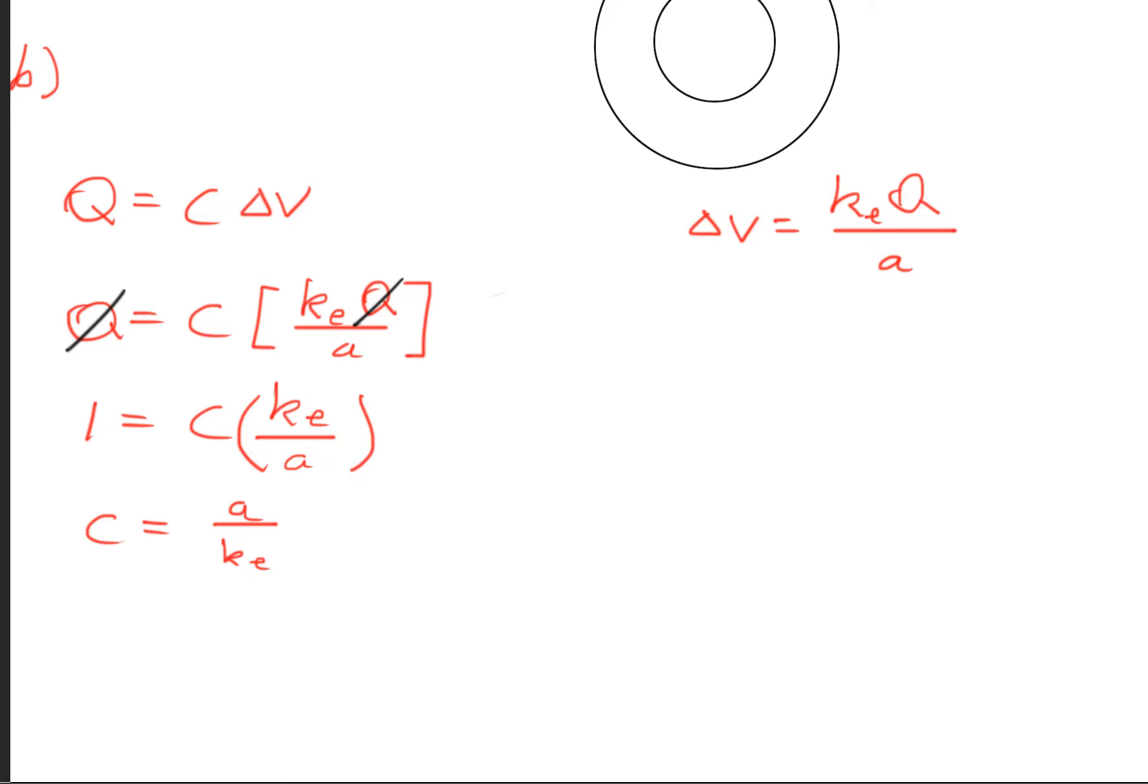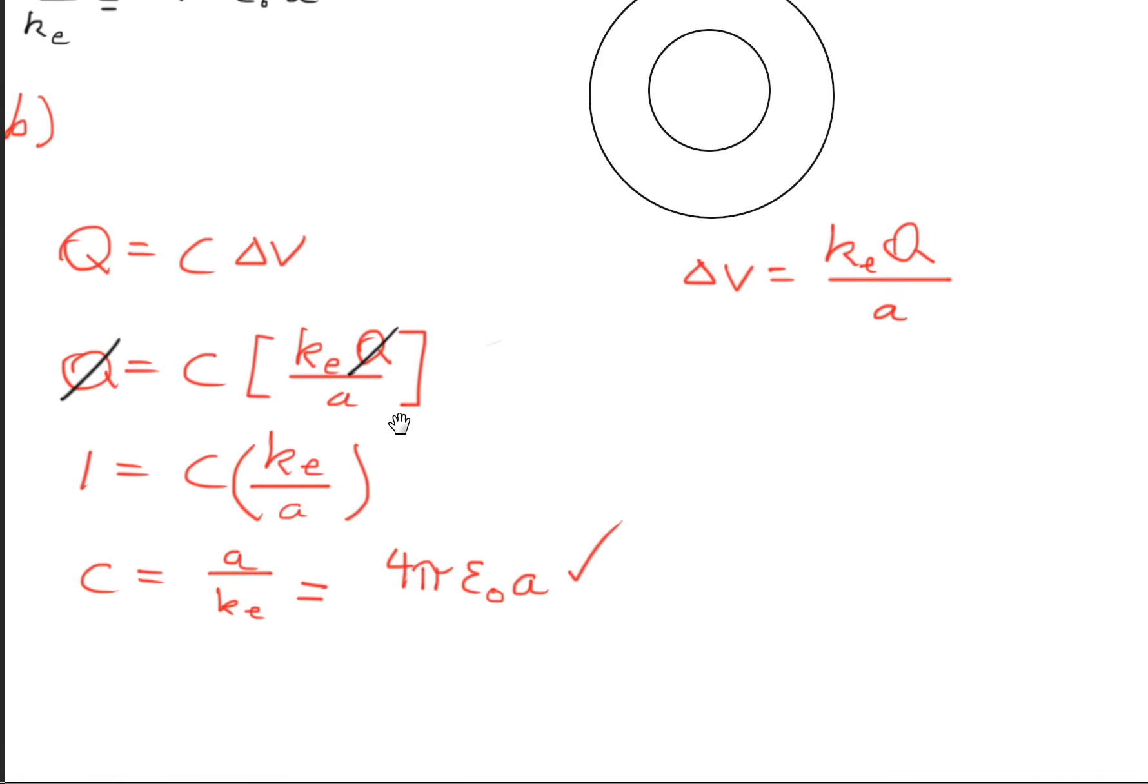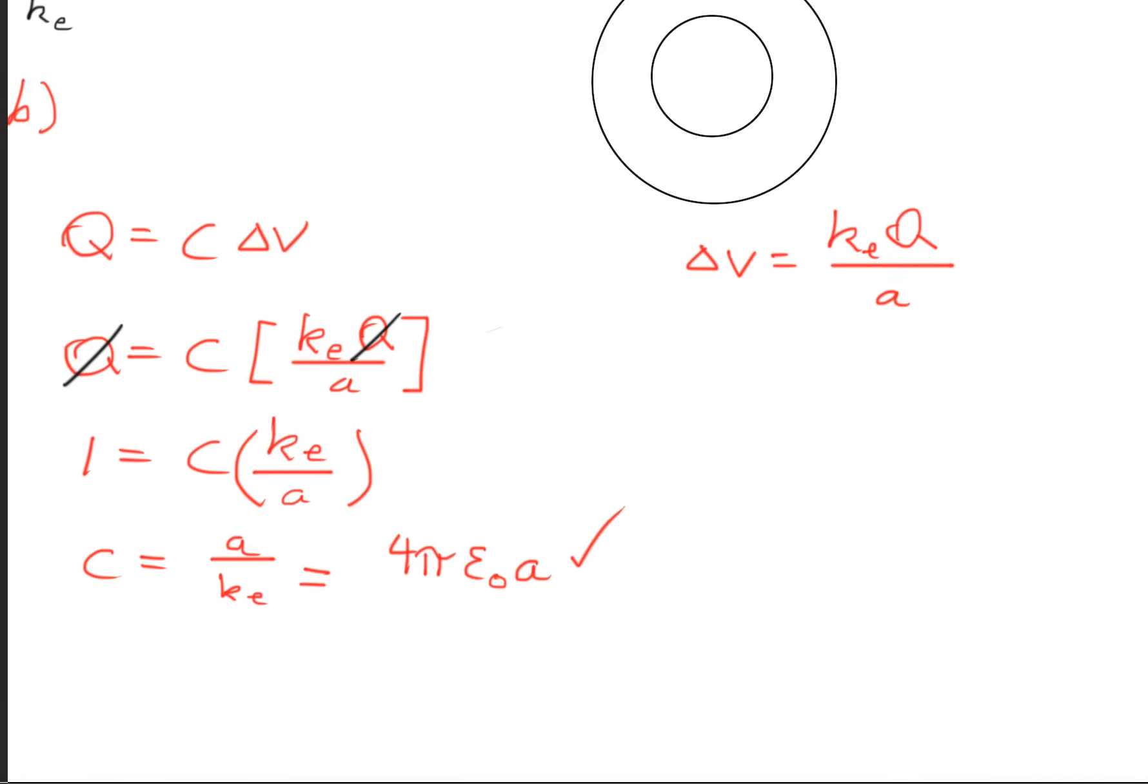Now a/k_e = 4π·ε₀·a. So we have just successfully proven what part B wanted us to prove. Now if that's a little confusing, recall that k_e, the Coulomb constant, is 1/(4π·ε₀).